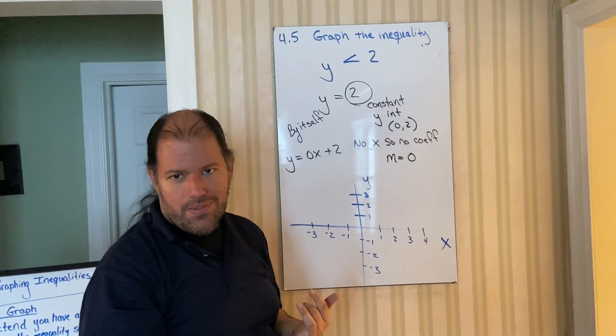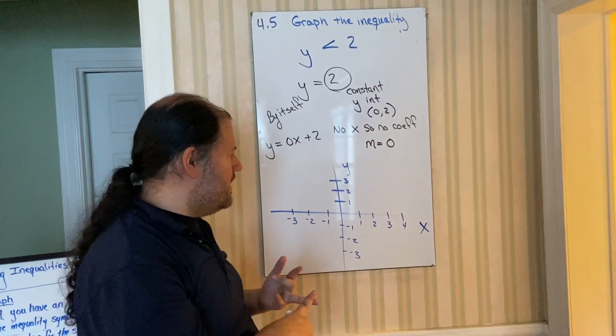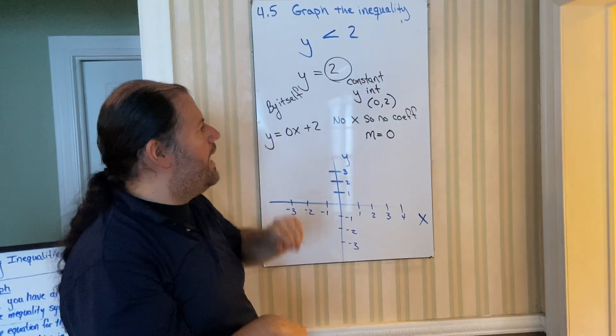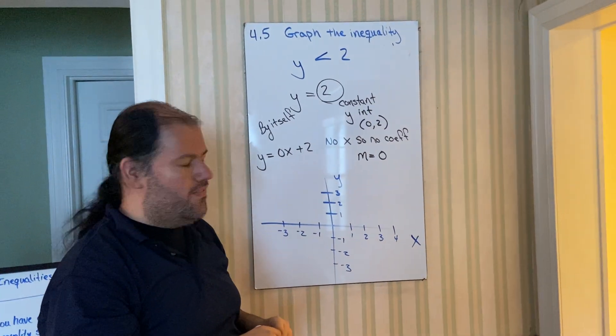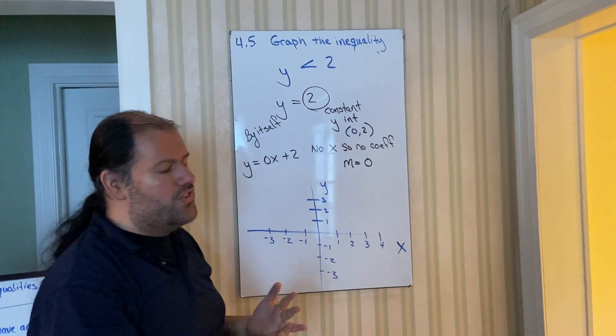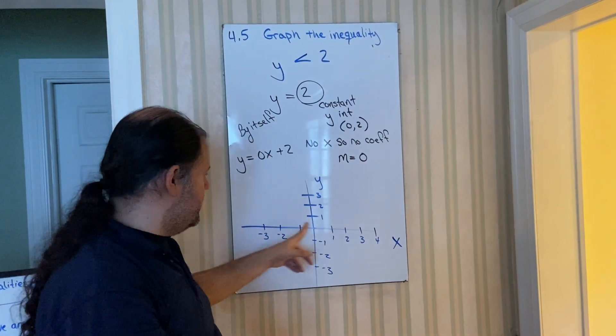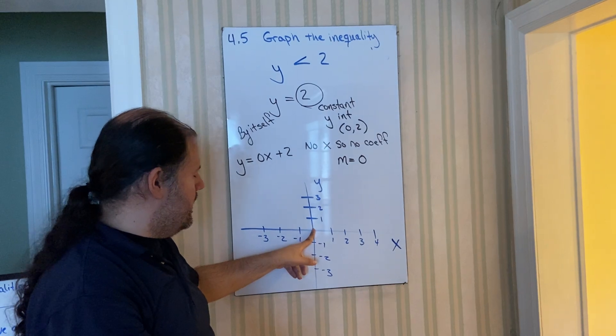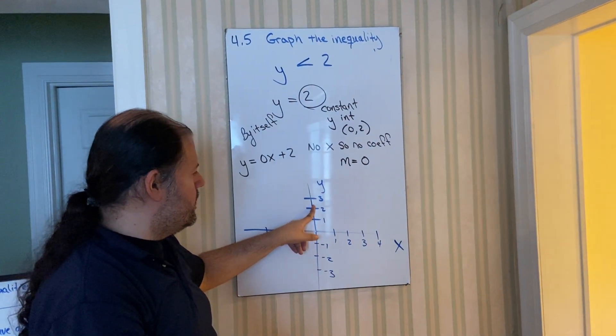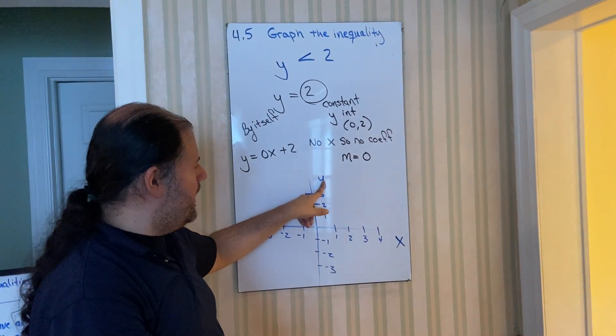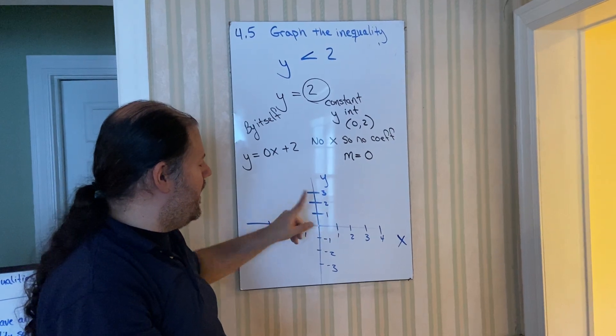Now that I know my slope and I know my y-intercept, let us plot zero, two. How do I plot zero, two? Remember, zero for the x is right here. And then the two tells me go up two units. Remember, y-intercept on y-axis.